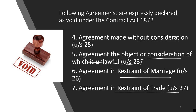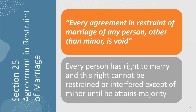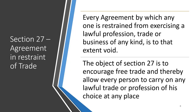Section 26 — agreement in restraint of marriage: every agreement in restraint of marriage of any person other than a minor is void. Marriage is a fundamental right of any human being, so you cannot stop anybody from marrying by entering into an agreement. For a minor, such an agreement is valid because the legal age for marriage is 18 to 21 depending on gender. Every person has the right to marry and this right cannot be restrained except for a minor until majority.